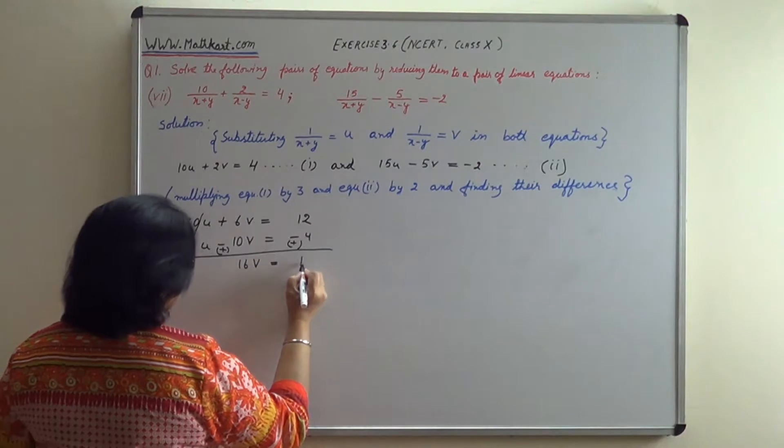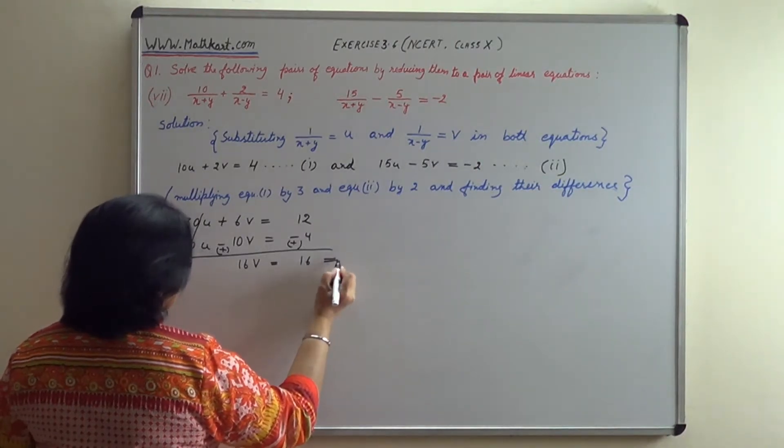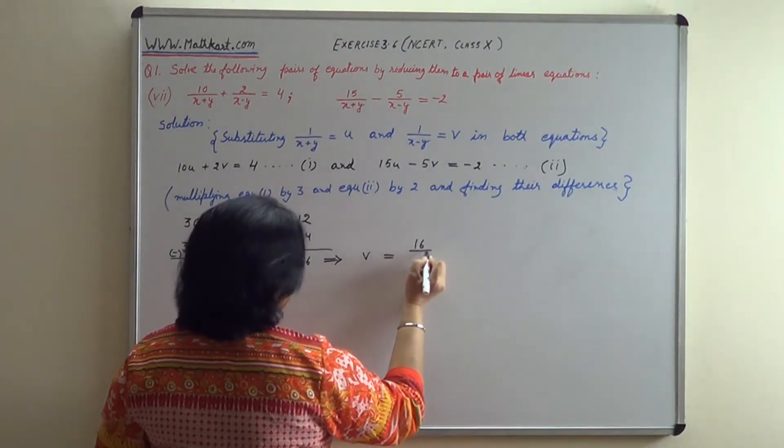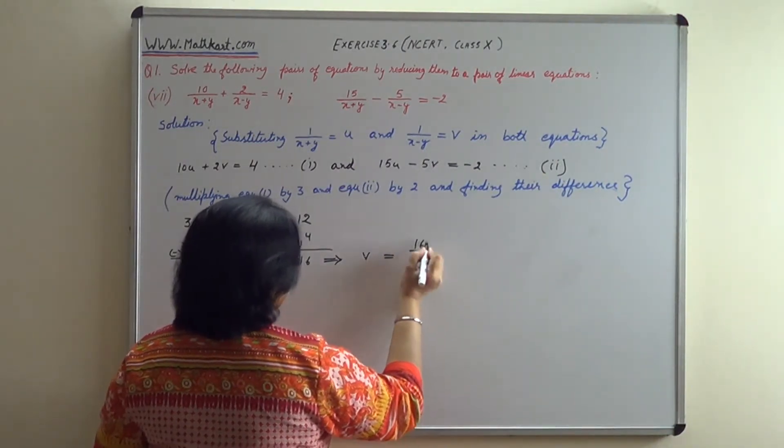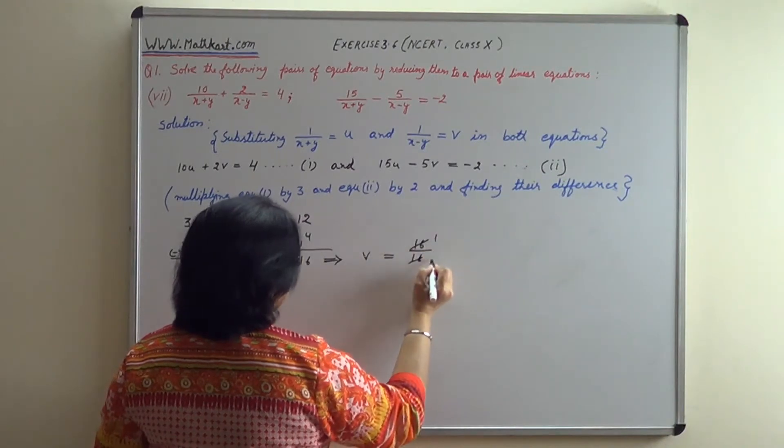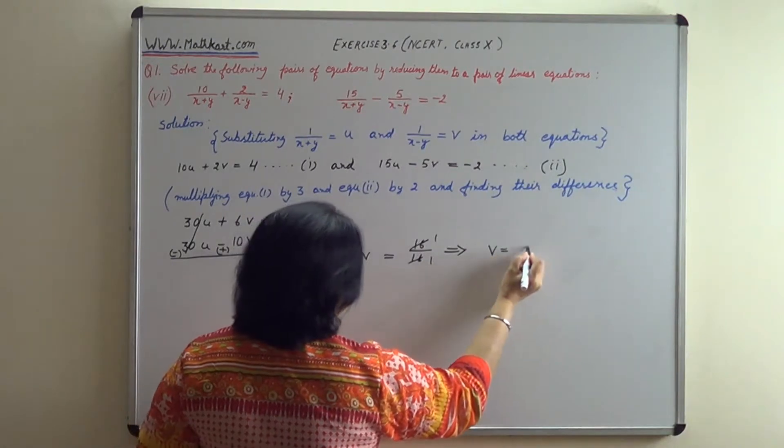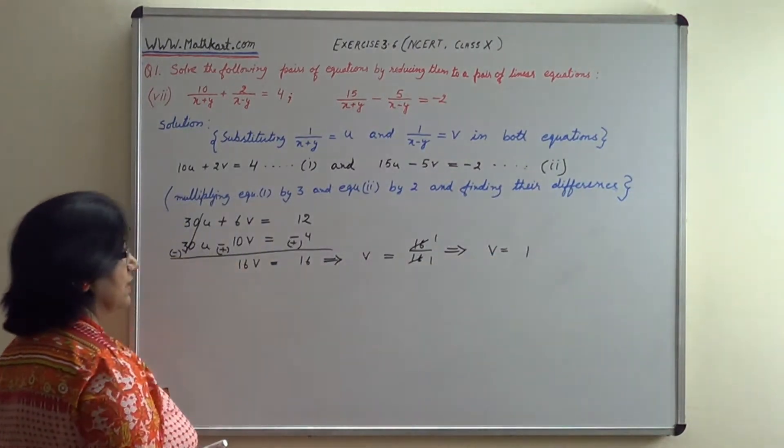Plus 6v plus 10v gives 16v equals 12 plus 4, which is 16. This implies that v equals 16 upon 16, which cancels to give v equals 1.